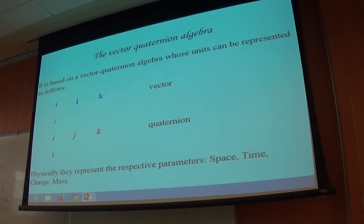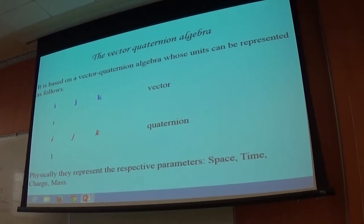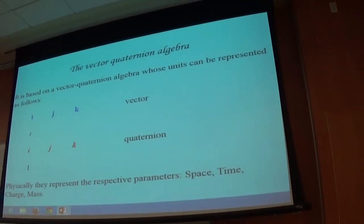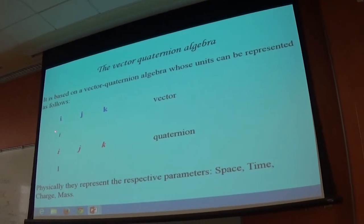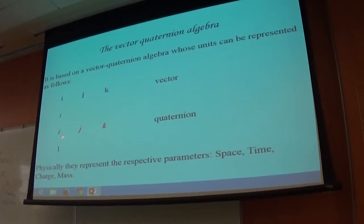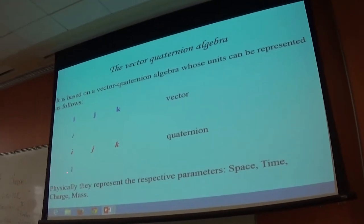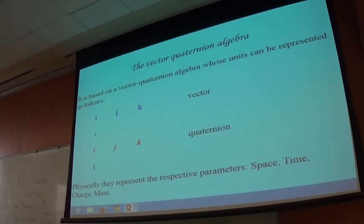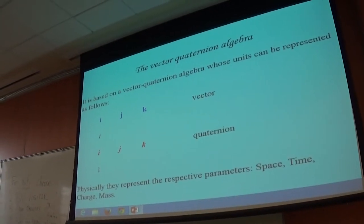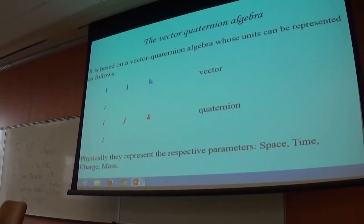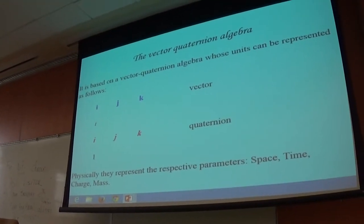The reason why we're using those is because physically, if one's doing physics — in my own way of thinking — the first one represents space, that represents time, that represents charge, and that represents mass or mass energy. These are the fundamental parameters of physics, so all the fundamental parameters can be represented within this algebra.